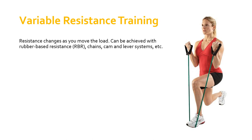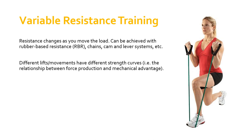How does it work? Different lifts and movements have different strength curves. Without getting too technical, because of the change in the relationship between force production and mechanical advantage, there are parts of the lift that are harder and parts that are easier. At the points where the musculoskeletal system has mechanical advantage — where the setup of the body's levers is advantageous — less muscular force production is needed. And vice versa: at points where the musculoskeletal system is at a mechanical disadvantage, more force production is needed to move the load.